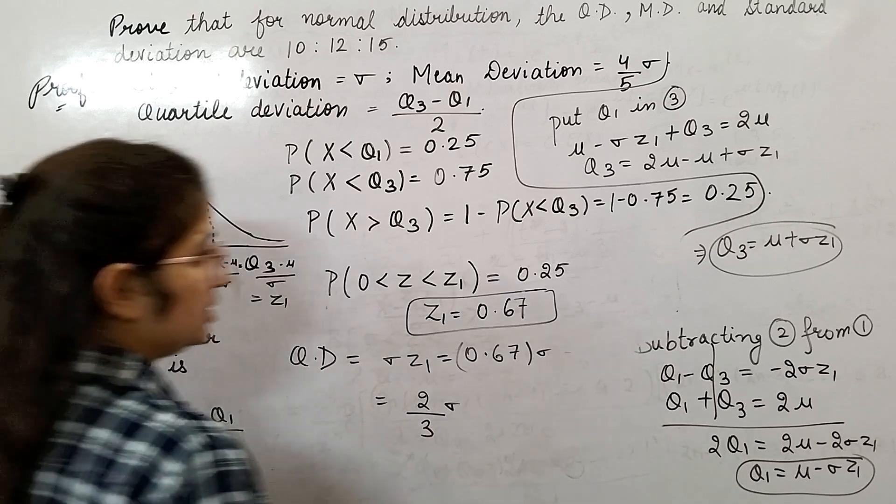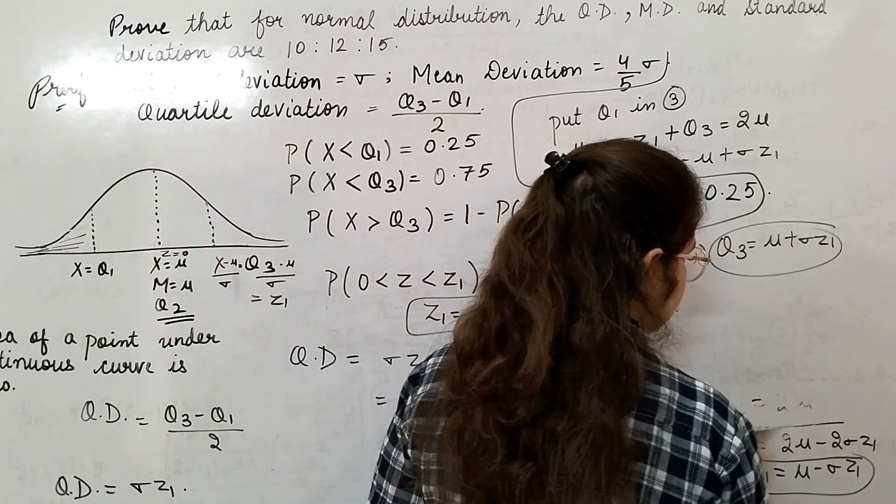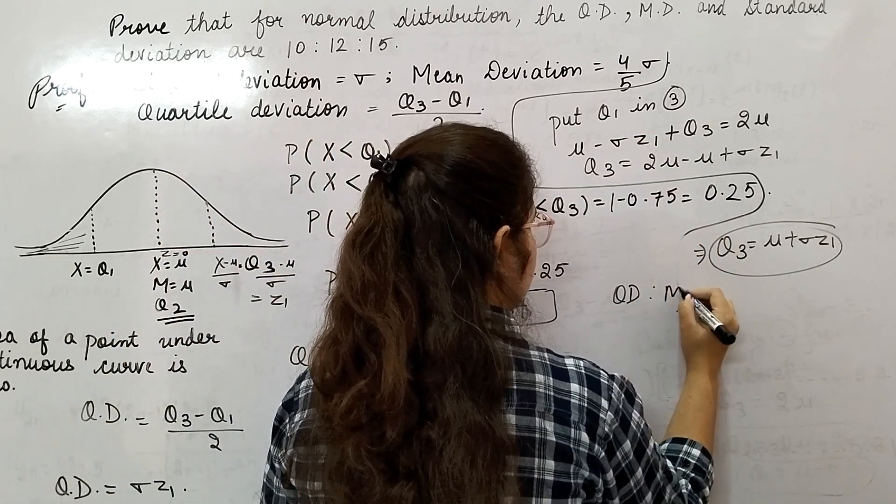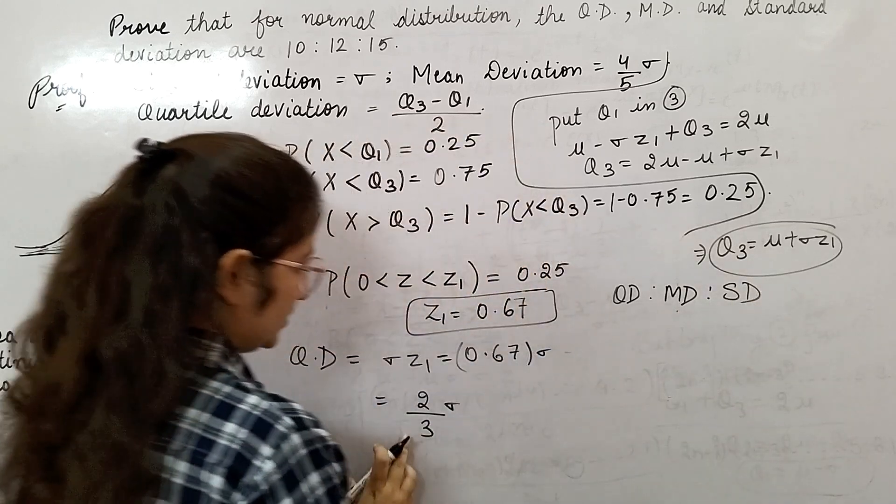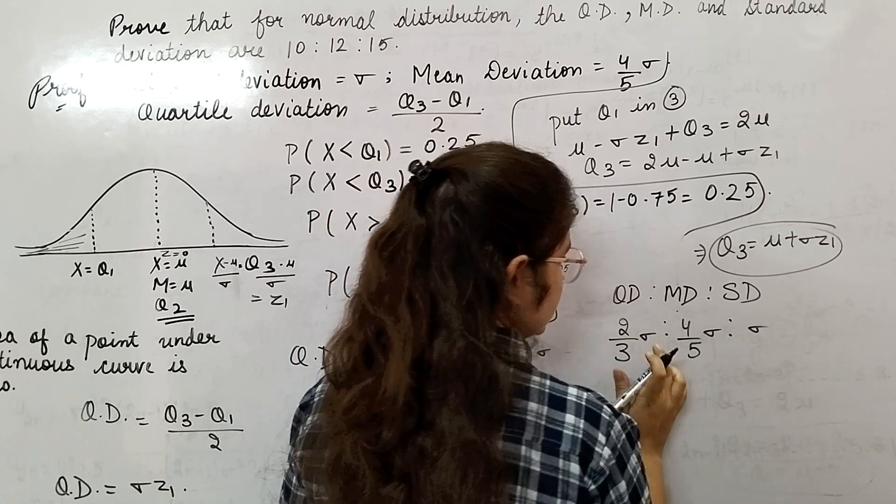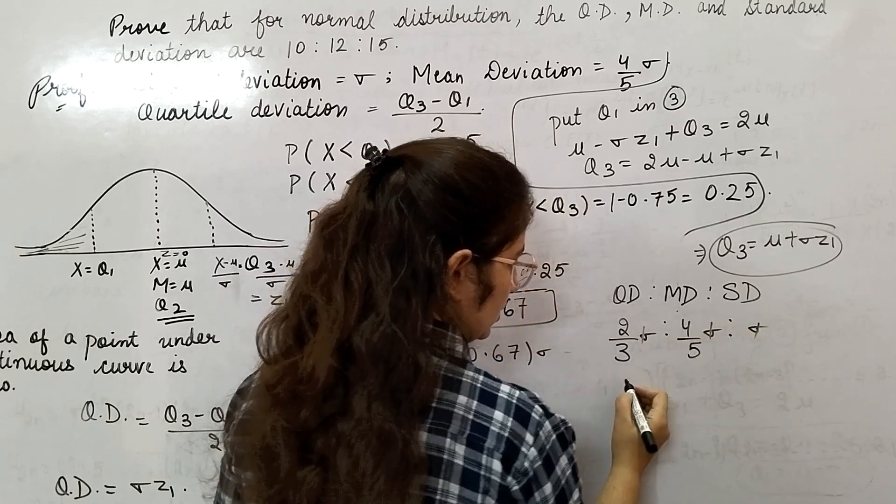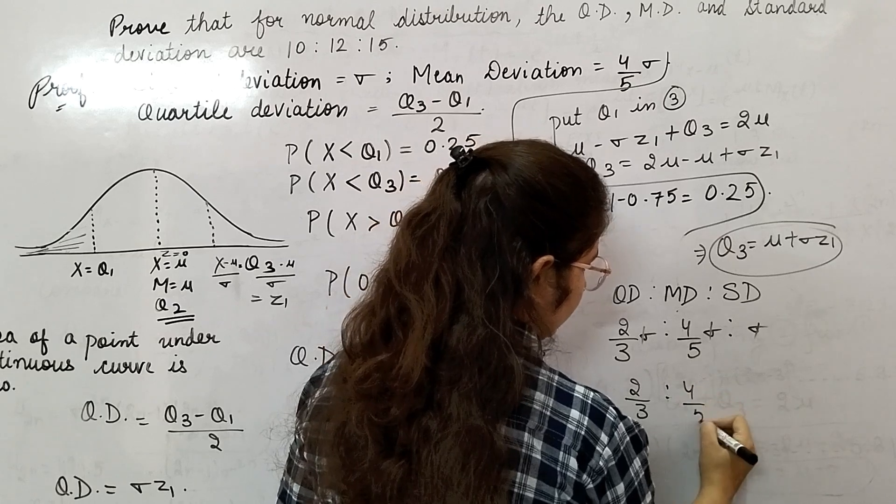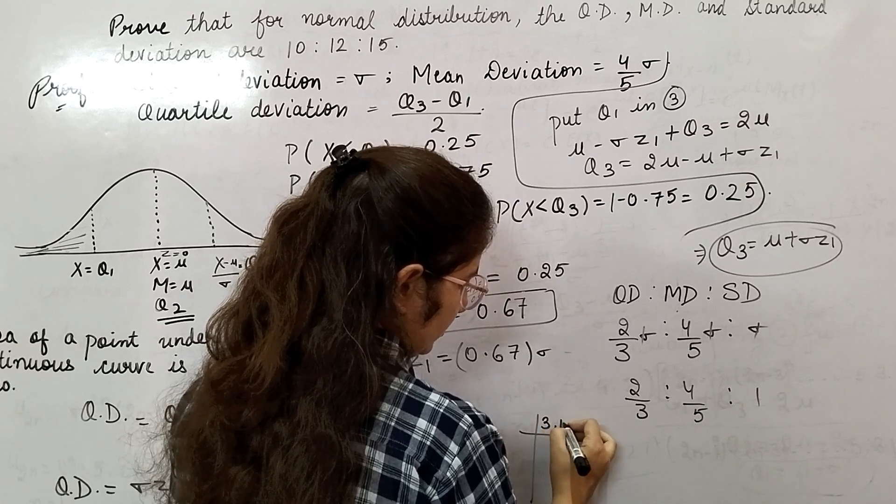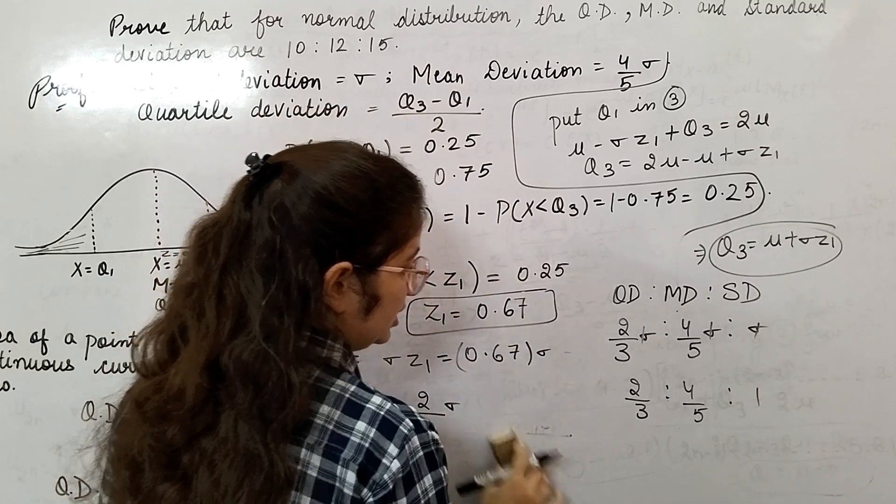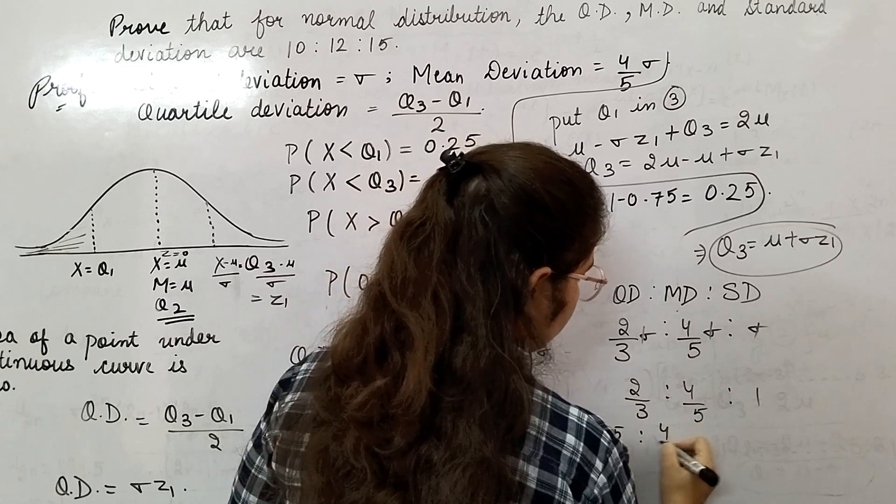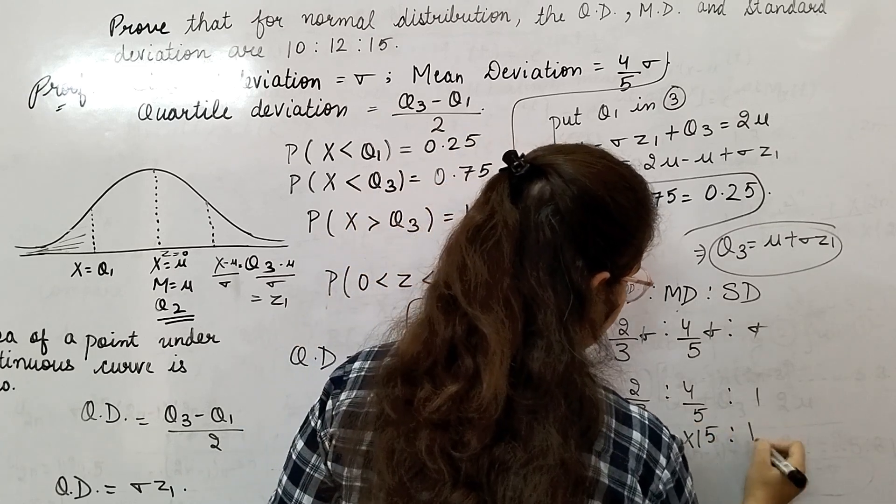Now you have quartile deviation, mean deviation, and standard deviation. The required ratio is quartile deviation to mean deviation to standard deviation. Quartile deviation is 2 by 3 sigma, mean deviation is 4 by 5 sigma, and standard deviation is sigma. Sigma cancels out. 2 by 3 ratio 4 by 5 ratio 1.